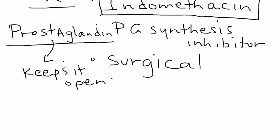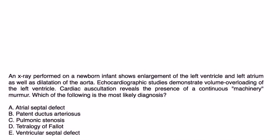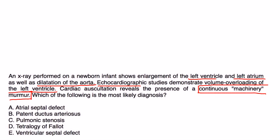Vignette 1: An X-ray on a newborn shows enlargement of the left ventricle and left atrium, as well as dilatation of the aorta. Echocardiogram demonstrates volume overloading of the left ventricle. Cardiac auscultation reveals a continuous machinery murmur. What is the most likely diagnosis? The machinery murmur is the key clue — this is patent ductus arteriosus.